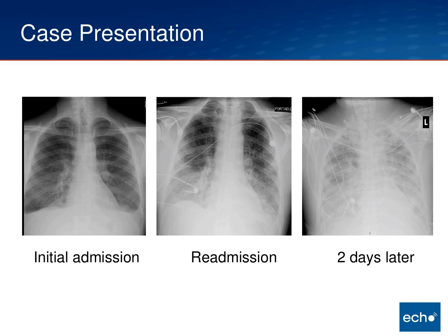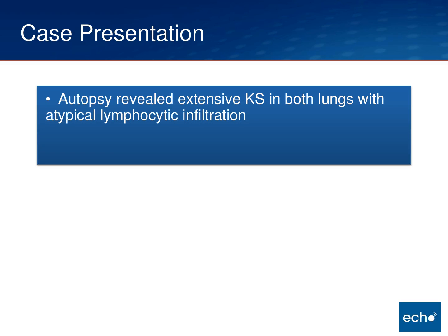These are his images from that initial admission, his readmission, and then the day before his death. We did have an autopsy on this gentleman, and it showed extensive Kaposi's sarcoma throughout both lungs. The key feature was an atypical lymphocytic infiltration all along his KS. So he had disseminated Kaposi's sarcoma that was cryptic, and then developed an acute inflammatory response to that, which was responsible for his death.